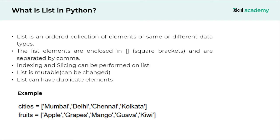Let us understand what lists are in Python. A list is an ordered collection of elements of same or different data type. By ordered collection we simply mean that the elements in the list will be indexed — each and every list element will have an index. List elements are enclosed in square brackets and they are separated by commas, so there can be n number of elements inside the list.